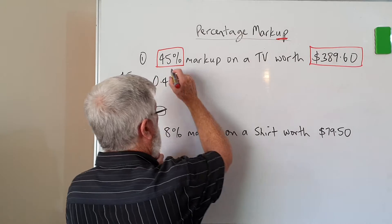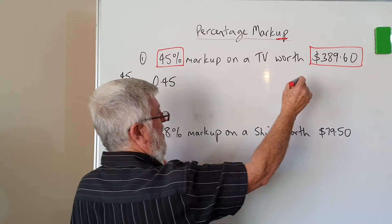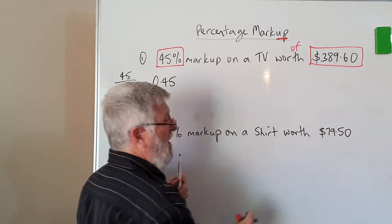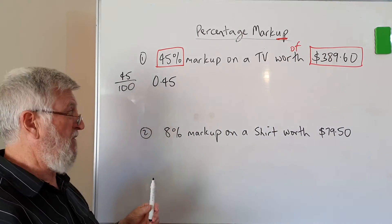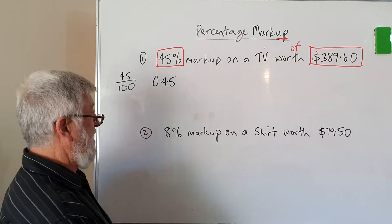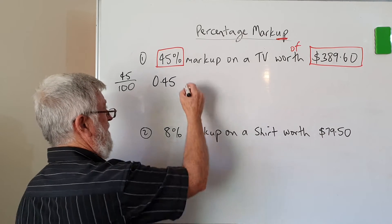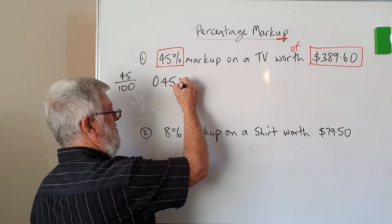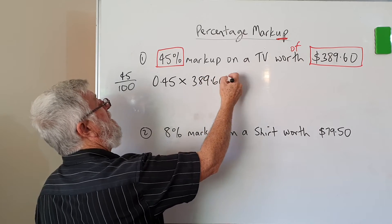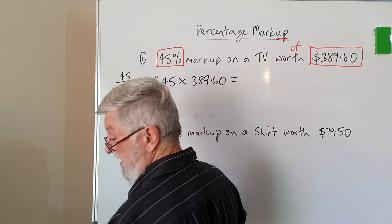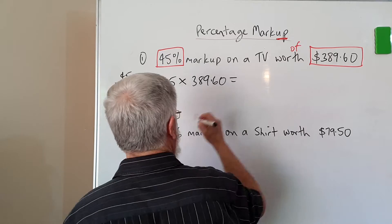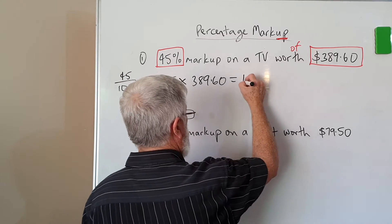Now the other thing is we want 45% of that. The question doesn't say 'of', but if you think it through, it's 45% of that — same as a discount. So we're now going to multiply it by $389.60.